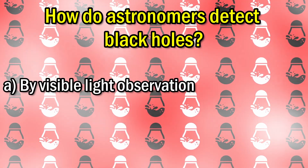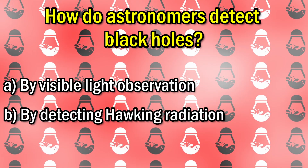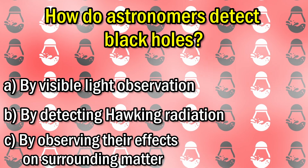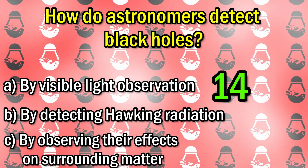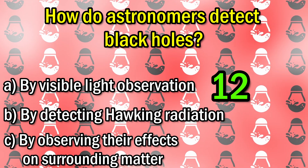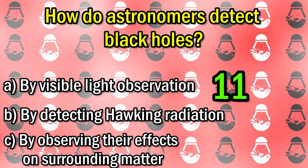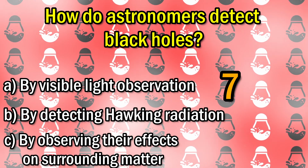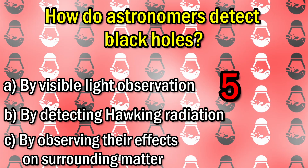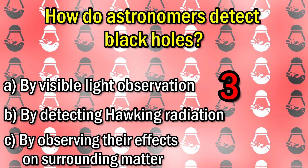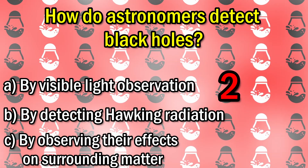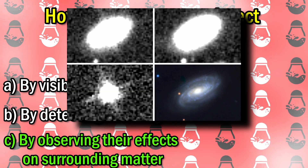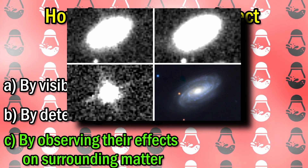A: by visible light observation. B: by detecting Hawking radiation. C: by observing their effects on surrounding matter. The correct answer is C: by observing their effects on surrounding matter.